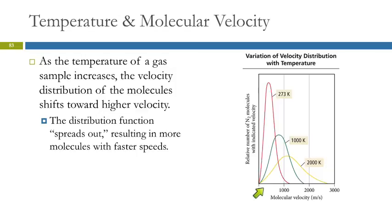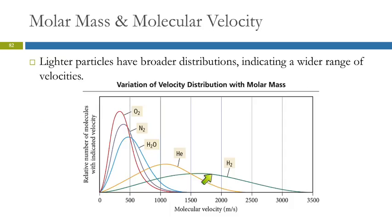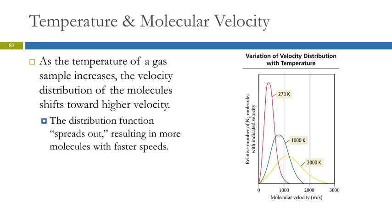As we increase the temperature of a gas, the average increases and the distribution spreads out. Here, this isn't specified what gas this is, but here we have at 273K a very tight distribution with a low molecular velocity. As we heat it up, it increases in average velocity, but it also spreads out. Just like in this graph, where the smaller molecules have a broader distribution, when you take any gas molecules and you heat them up, their distribution also spreads out as it gets higher in velocity.